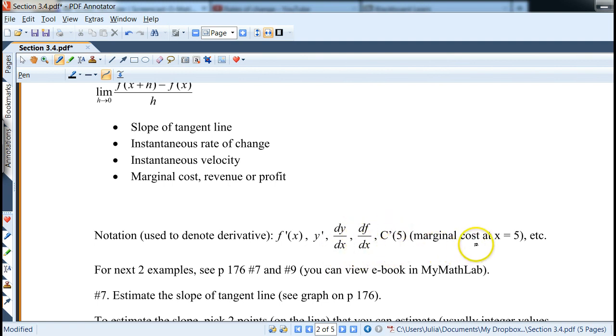This is a marginal cost at x equals 5. A lot of times we'll find something called derivative function, not quite the slope of the tangent line yet until we plug in a point. So we can do that, as opposed to calculating it at each point separately, which can be quite tedious.